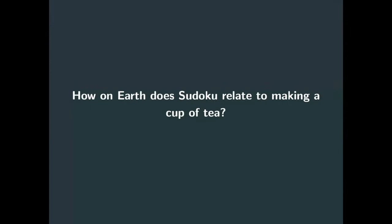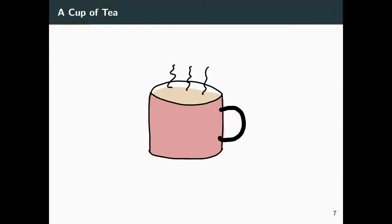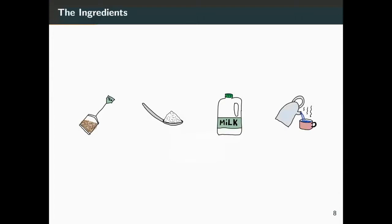You're probably thinking: how on earth does Sudoku relate to making a cup of tea? Well, if you think about making a cup of tea, you have some ingredients. We have four ingredients: the tea bag, the sugar, the milk, and the hot water. You can put these in the cup in any order — some people put the sugar in first, some even put the hot water in before anything else. So let's have a look at some of these methods.